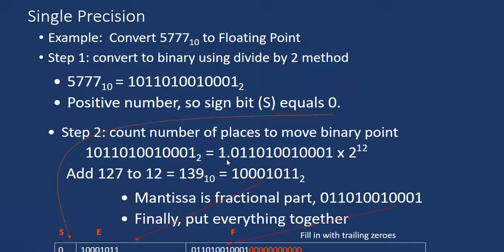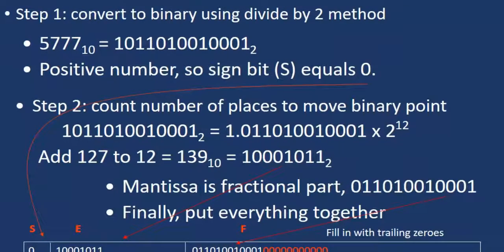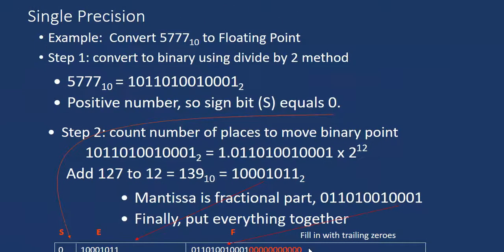Exponent is biased by 127, so we add 127 to 12 to get 139 in decimal. Convert 139 to binary as the exponent. The exponent will be stored in the exponent part, and mantissa stored here. We have 12 bits in mantissa, but need to store 23 bits, so we store the 12 bits first, then fill remaining bits with 0s. This is the way of representing a floating point number in memory.